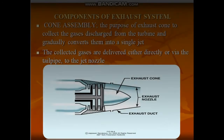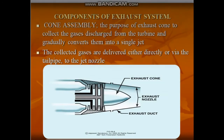The exhaust system of a turbine engine in general consists of three main components: the exhaust cone, the exhaust nozzle, and the exhaust duct.